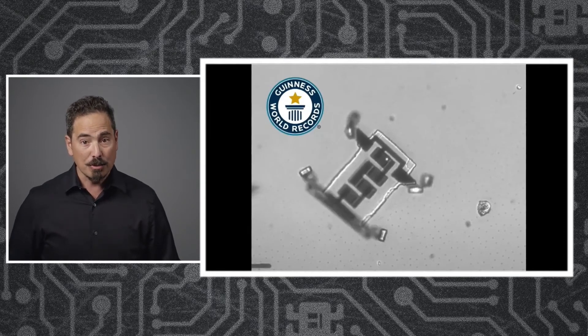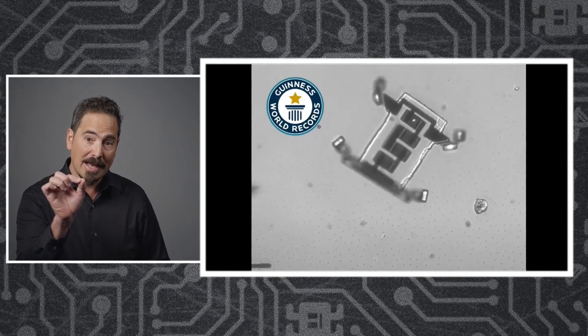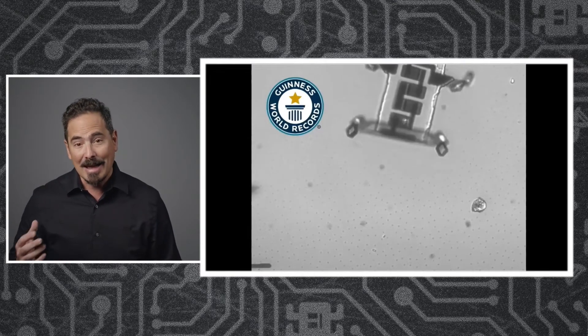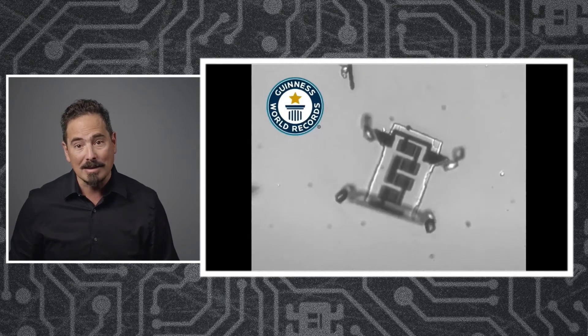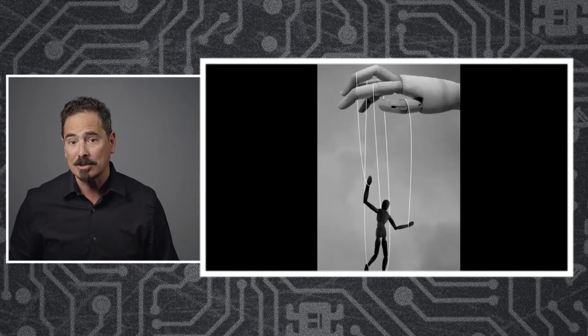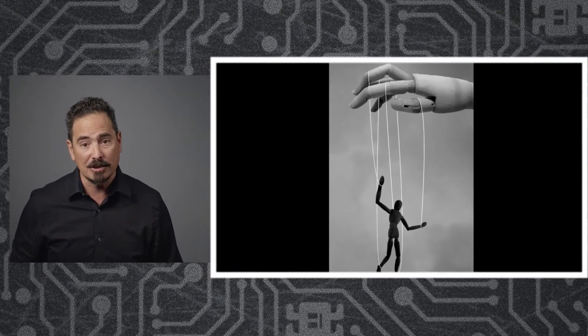The way this robot works is that we shine a laser on the front photovoltaic to activate the front legs and the back photovoltaic to activate the back legs. And in that sense, this robot, as amazing as it is, is still just a marionette being controlled by strings—in our case, laser pulses that are moving each limb. How do we go beyond that?